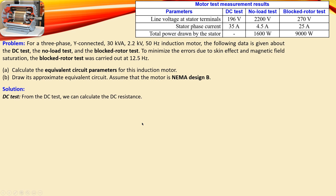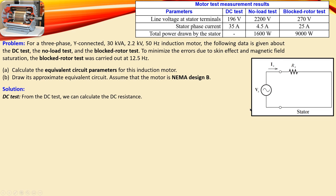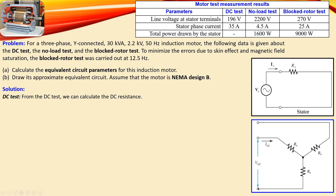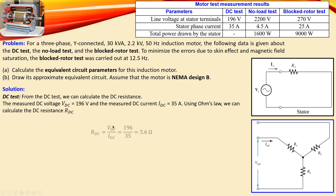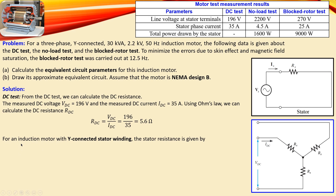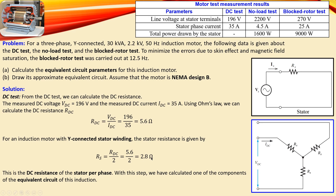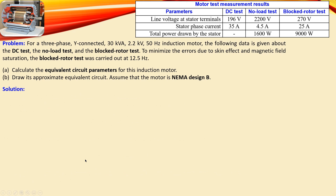For the DC test, we calculate the DC resistance using the equivalent circuit. Between the two measurement nodes, a DC voltage is applied and the DC current is measured. There are two stator resistors in series, so using Ohm's law we get Rdc = 5.6 Ω. The actual per-phase stator resistance Rs is half of that: Rs = 2.8 Ω. That's a very important distinction — it's 2.8 Ω per phase, not 5.6 Ω.